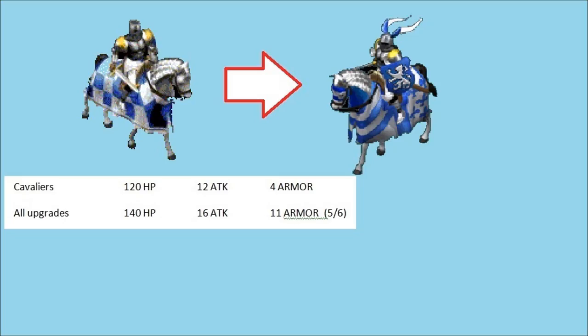As part of answering this question, first we have to know how good is the Cavalier and how good is the Paladin. Just look at the Cavalier completely unupgraded: 120 health points, 12 attack, and 4 armor. Assuming you have all the Blacksmith upgrades and you have Bloodlines, that goes up to 140 health points, 16 attack, and 11 armor in total.